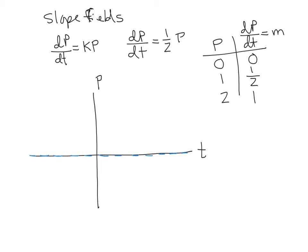These are all little tiny slopes with different values of time, but they're all 0. Then when P is 1, the slope is 1 half. I'm just drawing a bunch of slopes at P equals 1 that are about 1 half. Then when P is 2, the slope is about 1. And then if we keep going, if we said P was 3, well then we'd get a 3 half slope. So you can see the slope keeps getting bigger as P gets bigger.